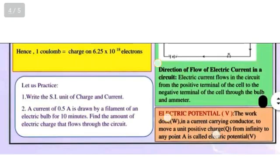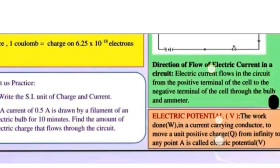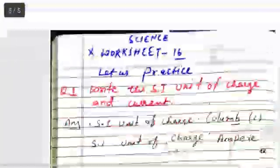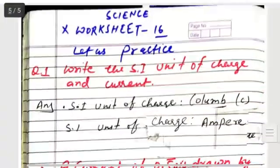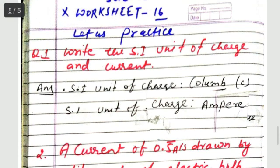Let us practice this. Write the SI unit of charge and current. Write the SI unit of charge. So the SI unit of charge is coulomb. It is correct. The SI unit of current is ampere.